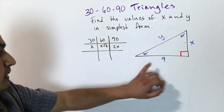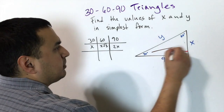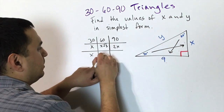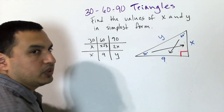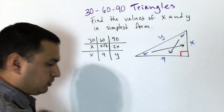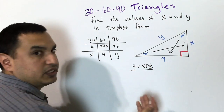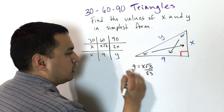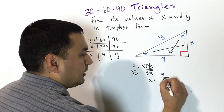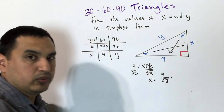In this example, the side given is 9, located across the 60° angle. We label the sides: x is across 30°, 9 is across 60°, and y is across 90°. Since the side across 60° equals x√3, we set up the equation: 9 = x√3. Dividing both sides by √3 gives x = 9/√3.